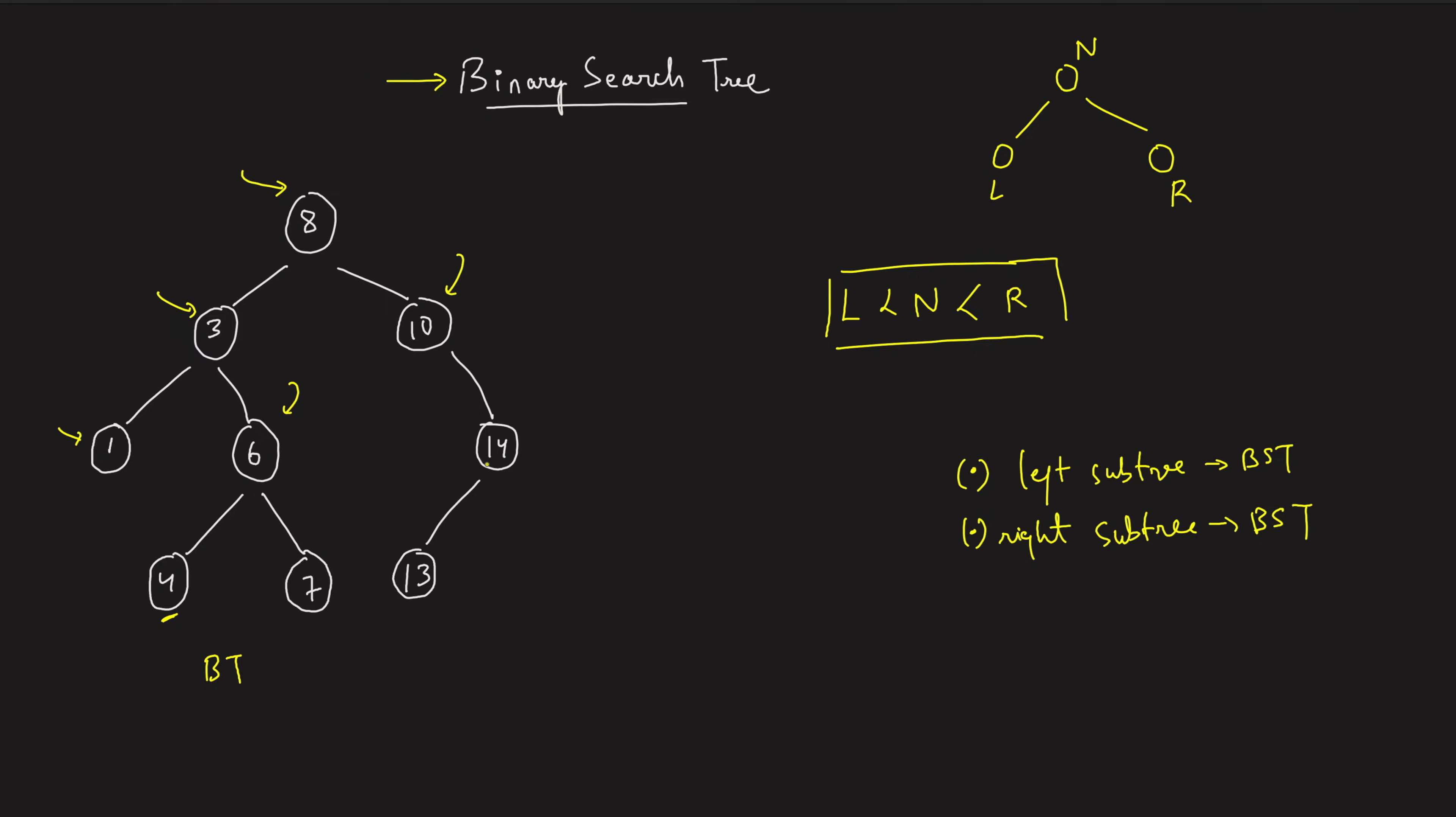So each subtree should be a BST and the entire tree should also be a BST. So I can say that this is the first condition. The left should be smaller than the node and the right should be greater than the node, and the left subtree should itself be a BST. The right subtree should again be a BST. So that's overall the definition of binary search tree.